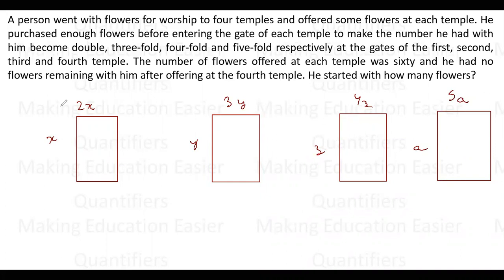The number of flowers offered at each temple was 60, and he had no flowers remaining after offering at the fourth temple. So when he came out from here he had zero left, which means when he devoted these flowers they must have finished, right? Because the flowers are 60, equivalent to 0. So he came to the temple with 12 flowers.